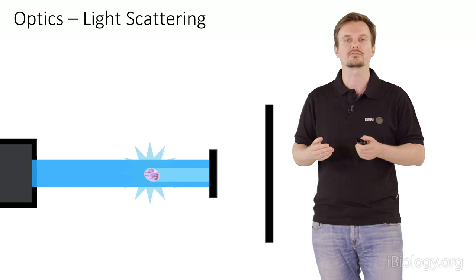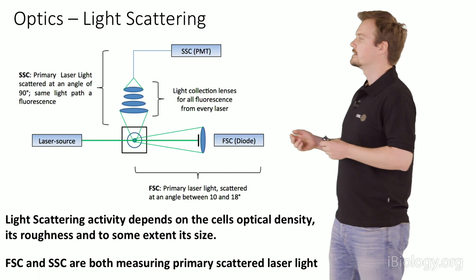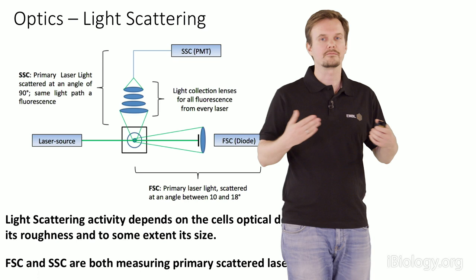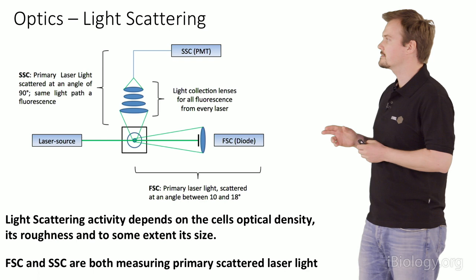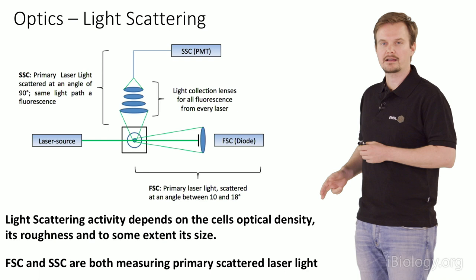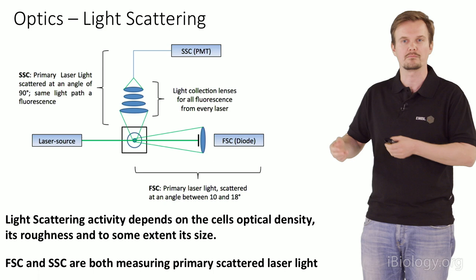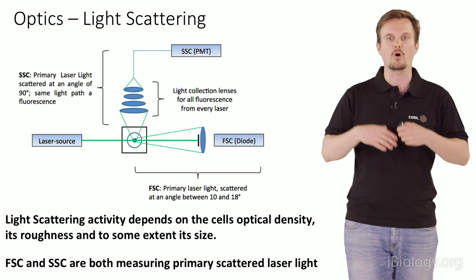Because light scatters omnidirectionally, we don't only generate a forward scatter signal — we also generate a side scatter signal. Most instruments take this at 90 degrees orthogonal to the primary laser light, which is simple to build and very precise. Light scattering activity depends on the cell's optical density, its makeup, its surface roughness — membrane protrusions can induce more scattering — and to a certain extent also its size, though not predominantly. These are all merging functions together.